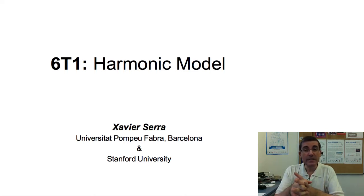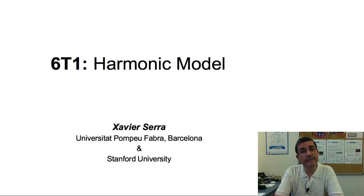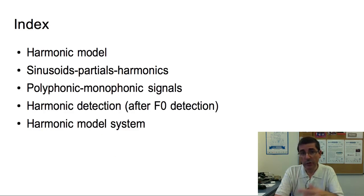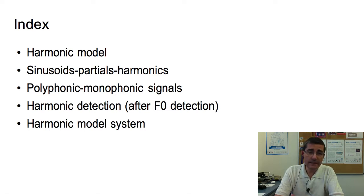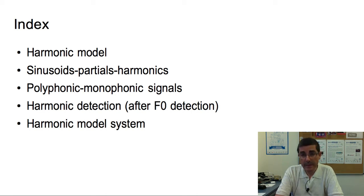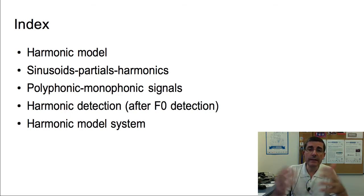Last week we talked about the sinusoidal model, and now, following the path towards a more flexible and higher level representation of sounds, we present the harmonic model. We will first introduce the actual model, then talk about the difference between sinusoids, partials, and harmonics, then discuss the difference between polyphonic and monophonic signals, then present the idea of how to detect these harmonics from a sound, given that we know the fundamental frequency — which will be the topic of the next lecture — and then we'll put it together into an analysis-synthesis system, the harmonic model system.